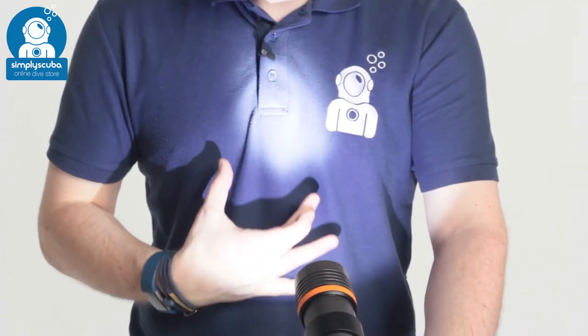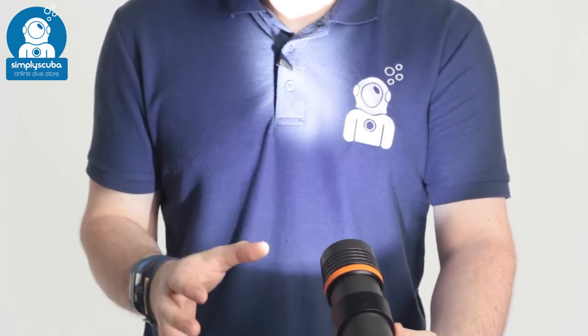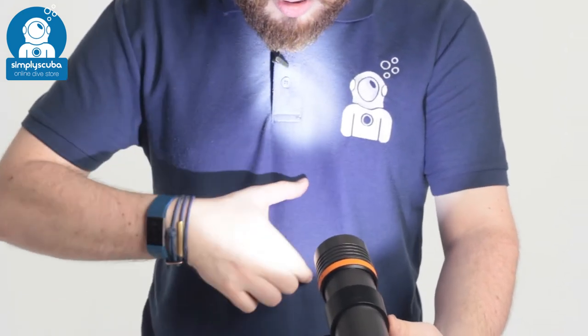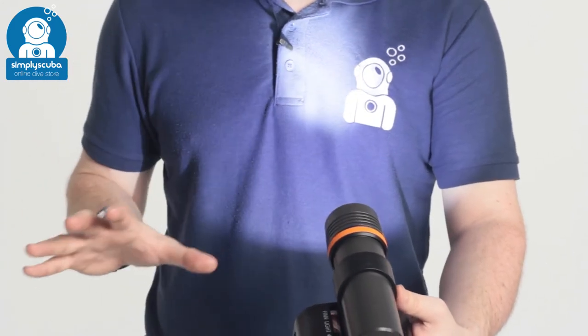So you can see it's quite a tight spot beam, so that's going to pierce through murky water. It's very handy for communicating with buddies, but you also get this light aurora around the side, so you still illuminate a lot of the scene.